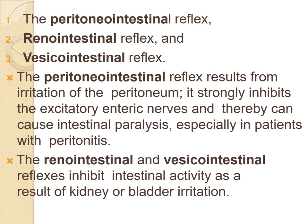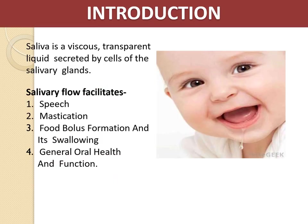We have seen the general structure and functional organization of the GI tract. Now we will move to salivary secretion. Saliva is a viscous transparent liquid secreted by the cells of the salivary glands — the parotid glands, sublingual glands, and submandibular glands. Salivary flow facilitates speech, mastication, food bolus formation and swallowing, and general oral health and function.